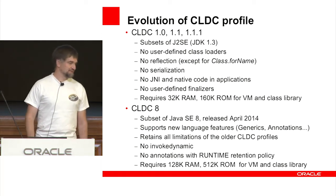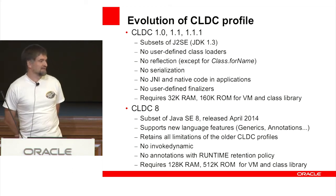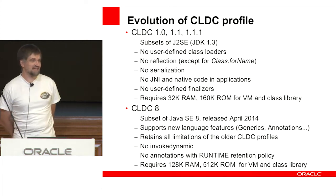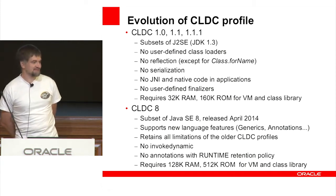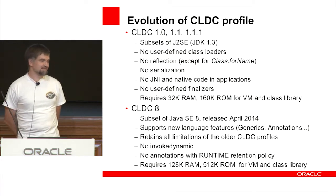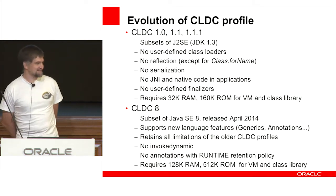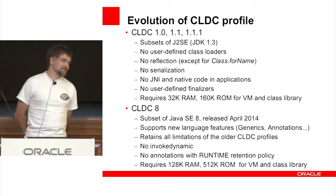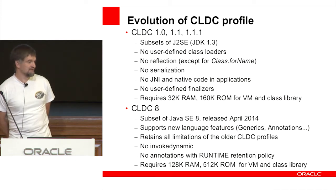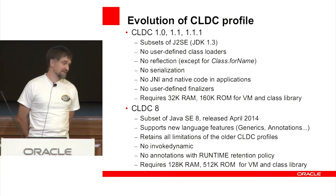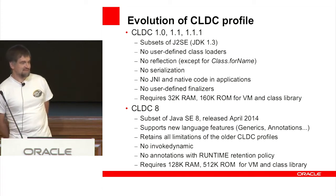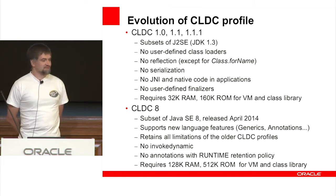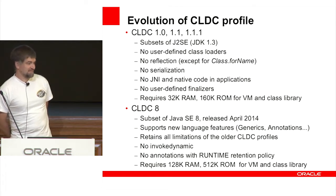What is CLDC? There are three old versions and one new version. Old versions were all subsets of JDK 1.3. In these profiles there were no user-defined class loaders, no reflection except for Class.forName, no serialization, no JNI and native code applications, and no user-defined finalizers. The entire implementation with class library had to fit into 32K ROM and 160K ROM for the virtual machine and class libraries together. Recently, it was revised to a subset of Java SE 8, released in April of this year. Now it supports generics, annotations, and other new language features, while retaining all the limitations of older CLDC profiles.